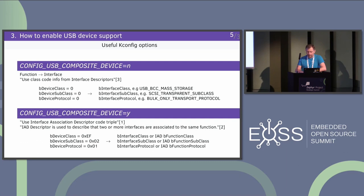In the current state of the tree, this option just changes the class/subclass/protocol code triple for the device class. If this option is not set, then in the device descriptor the code triple is set to zero, which means the host has to look at the interface descriptor to identify the specific function. Like, if there is a mass storage class enabled, the host will look at the interface descriptor of that specific interface to identify the function.